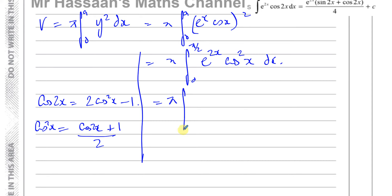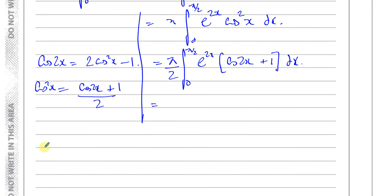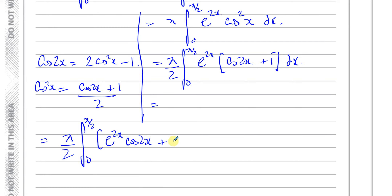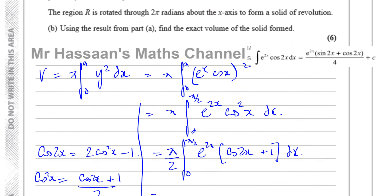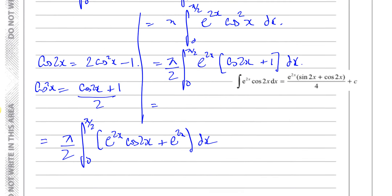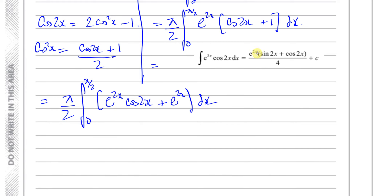So we have π times the integral from 0 to π/2 of e^(2x)·(cos(2x) + 1)/2 dx. Taking the half out: (π/2) times the integral from 0 to π/2 of e^(2x)·cos(2x) + e^(2x) dx. The first term is exactly the integral from part A! For the second term, integrating e^(2x) gives (1/2)e^(2x).